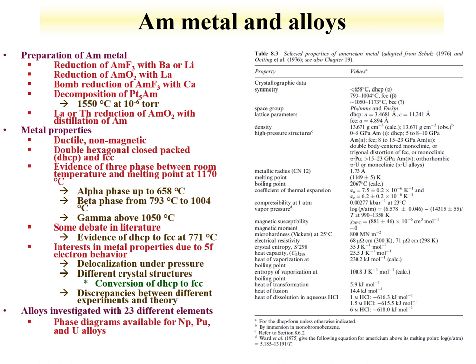The metallic properties of americium are relatively non-magnetic and ductile, and there is considerable interest in understanding the behavior of the metal due to the 5f electrons. These 5f electrons tend to delocalize under pressure, which is also the reason why we get different structures from the hexagonal close-packed to the face-centered cubic and then the body-centered cubic. There are discrepancies between experiments and theory related to the formation of these different phases.